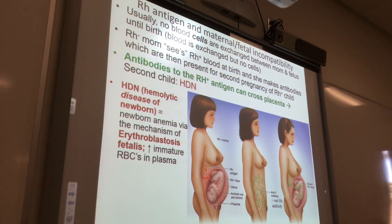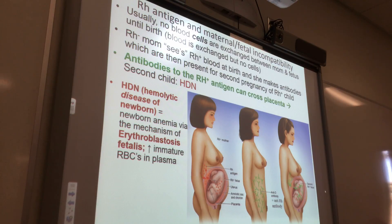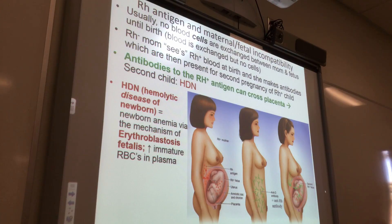The newborn is anemic. Anemia — there are about 20 different types of anemia. Basically you can't carry oxygen in your red blood cells. In this case, instead of having a billion red blood cells, you've got maybe 100,000 red blood cells because these antibodies destroyed a whole bunch of your red blood cells. So this is the name of the disease — HDN — and the mechanism is erythroblastosis fetalis.